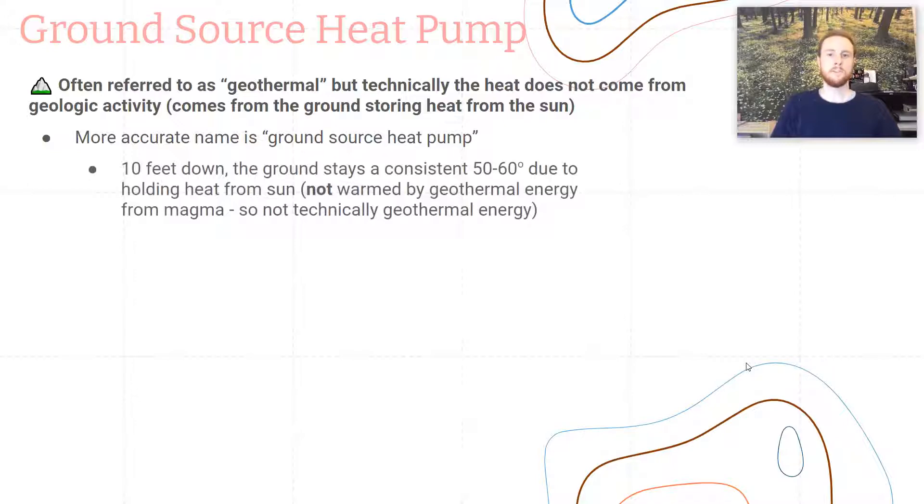In reality, this is called a ground source heat pump. About 10 feet down in the ground, the Earth stays at a pretty consistent 50 to 60 degree temperature due to the sun's rays that warm it. So even in winter when it gets below freezing at Earth's surface, or in summer when it can get upwards of 100 degrees, the ground about 10 feet down stays at that consistent 50 to 60 degrees. And so this can be used strategically both to heat homes in the winter and to cool them in the summer.